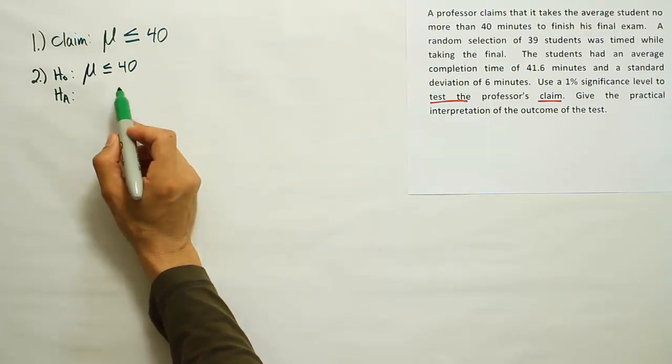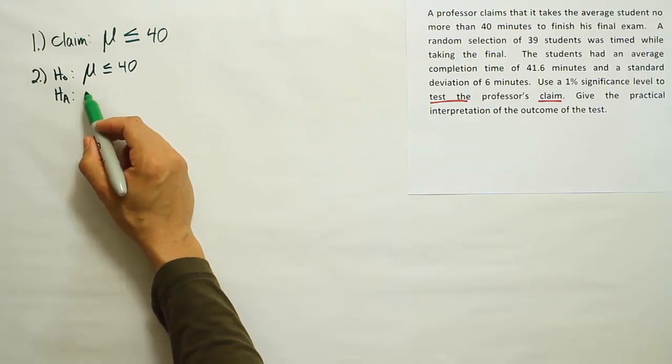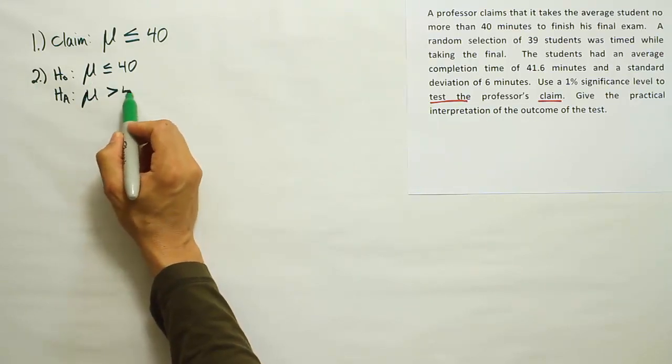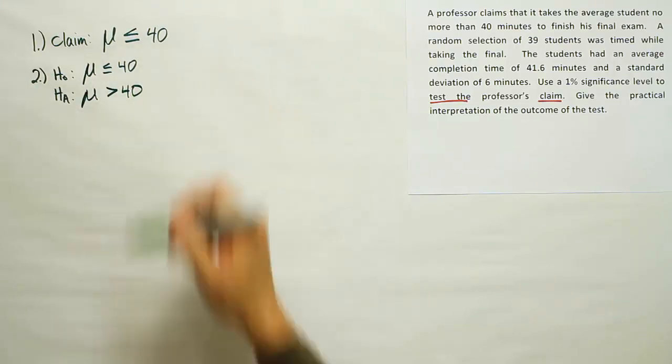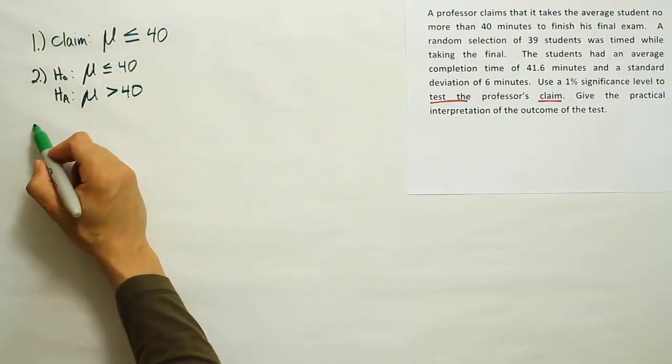HA, therefore, must be the opposite of this. So if we say the mean is less than or equal to 40, the HA must say that it's then greater than 40, because this covers all the cases. Okay, so our competing pair of hypotheses are set up.